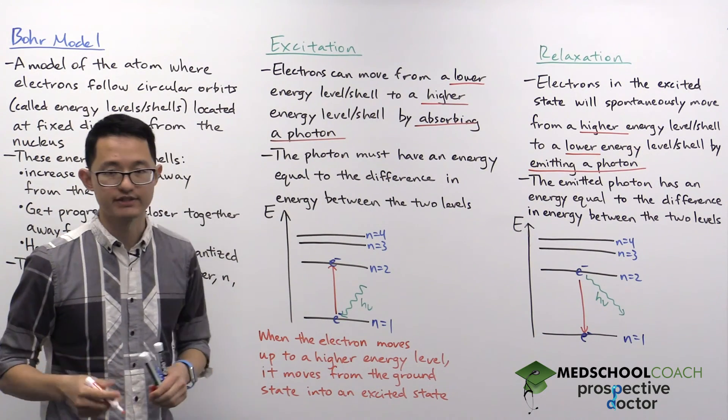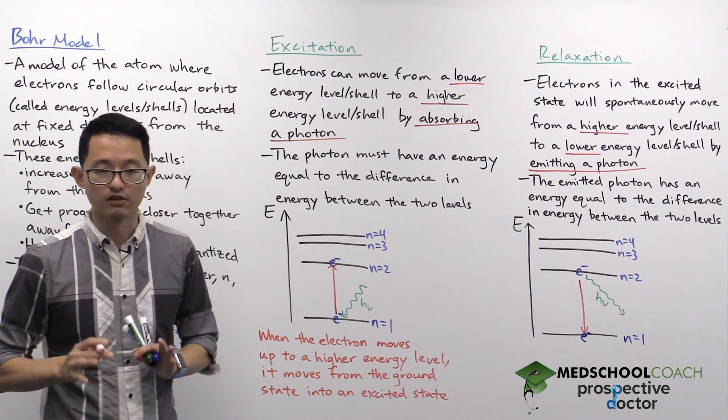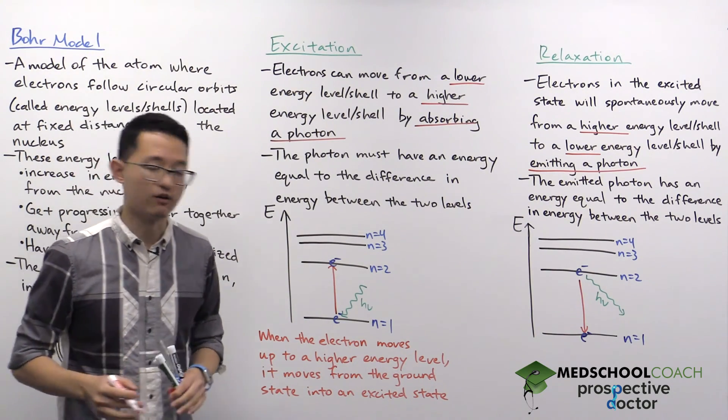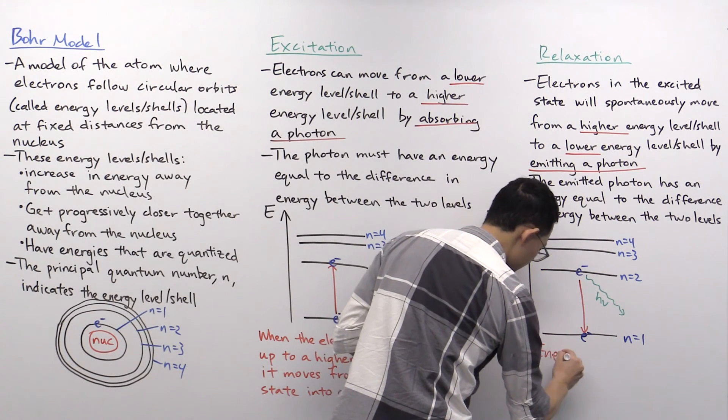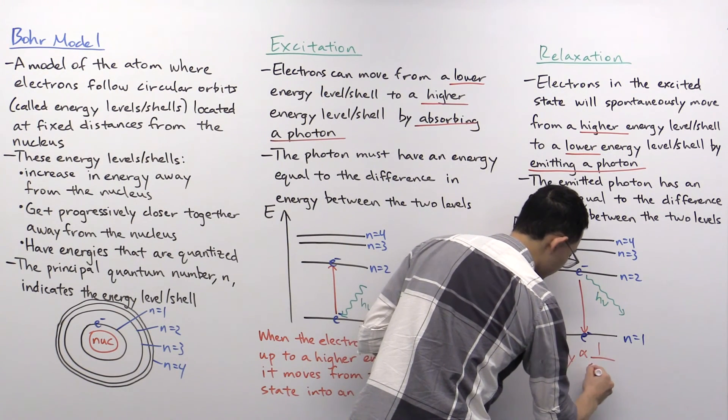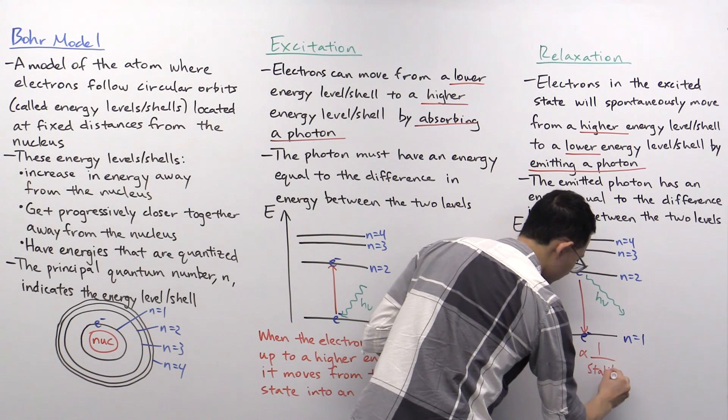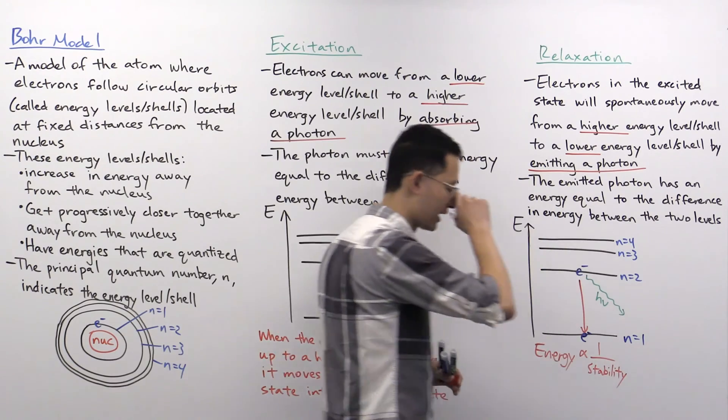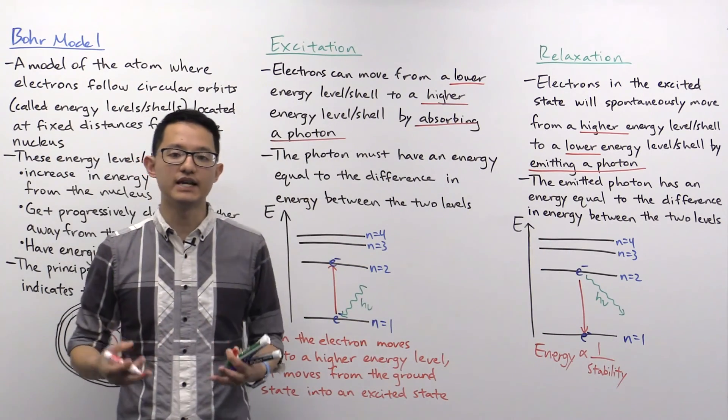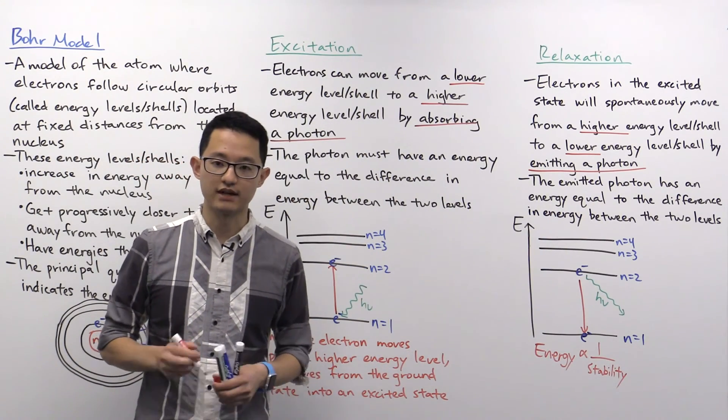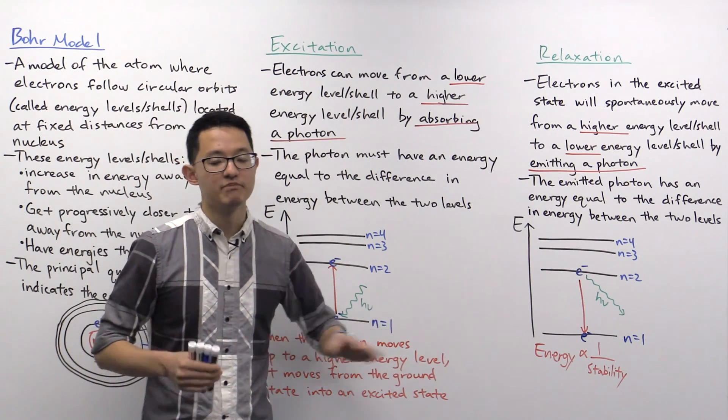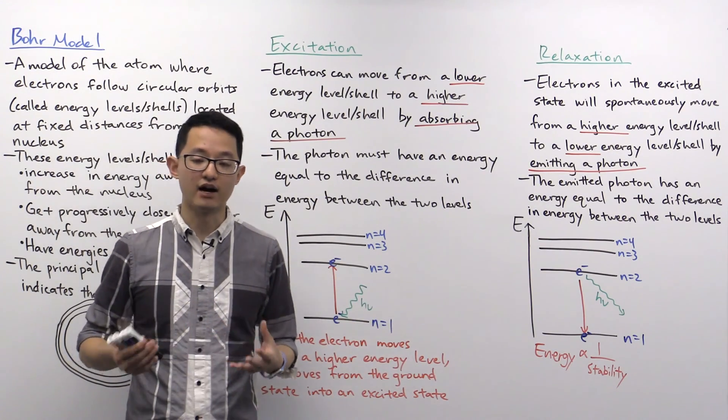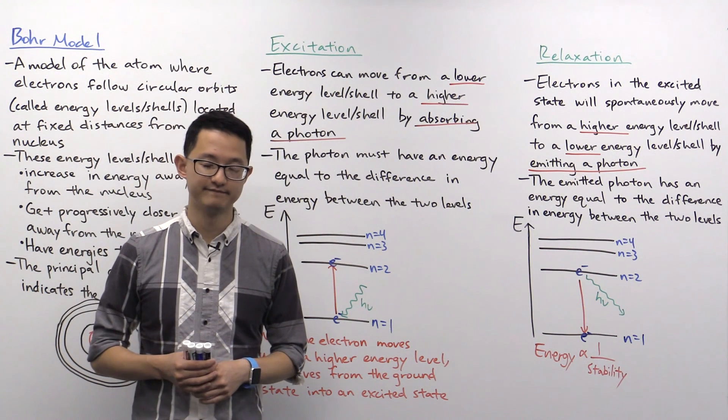The last thing I want to mention is just a very large global concept really within all of science that's good for you to keep in mind. And that is energy is inversely related to stability. That explained why when the electron got excited and moved up to that higher energy level, it spontaneously relaxed and moved back down to that lower energy level. This concept applies here, but it's also going to apply to many other topics we're going to discuss. Thank you.